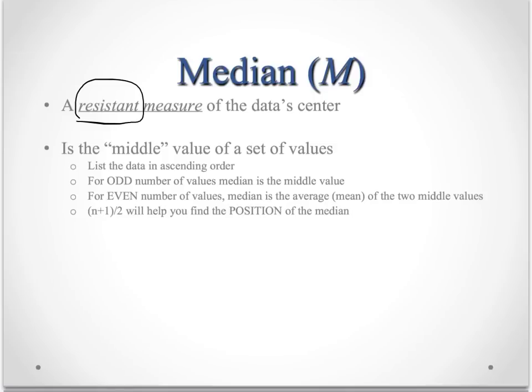So say you had 14 values. The median is between the 7th and the 8th value. And you would add those two up, divide by 2 to get their average.